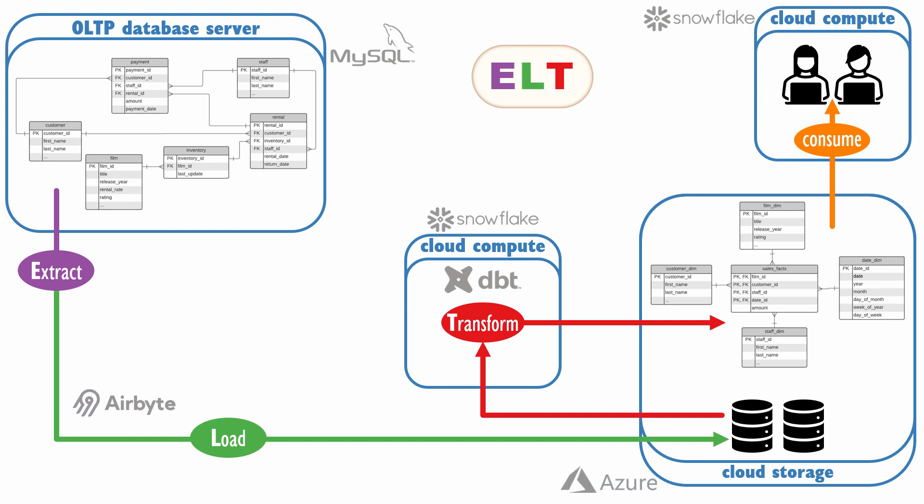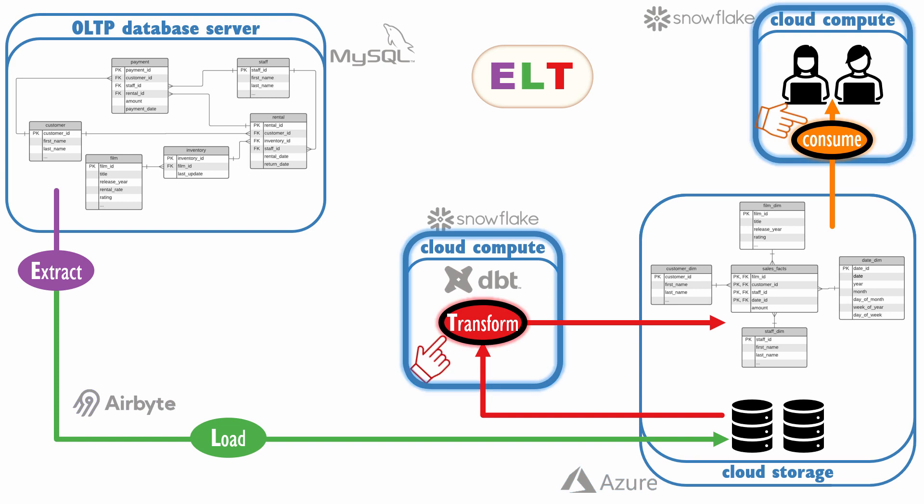Since cloud databases like Snowflake use the separation between compute and storage technique, consumption requests can be fulfilled by compute clusters that are not dedicated to performing transformations. And this is why ELT has become popular — different workloads can run on their own compute clusters, so there is no contention for resources between transformations and consumption.